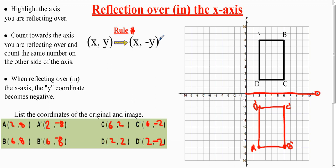If you can't remember the rule, then you just count like I did over here and do it without the rule. And that is a reflection over or in the x-axis. Thank you.